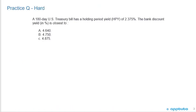This is an excellent question with regards to converting amongst the yields. On the CFA continuum, this is maybe a little bit on the hard side, but with a bit of practice it gets easier because it's a two-part question. With 90 seconds, you have to work quickly and efficiently. A 180-day U.S. Treasury bill has a holding period yield of 2.375%. They're asking for the bank discount yield — closest to A, 4.64%, B, 4.75%, or C, 4.875%.